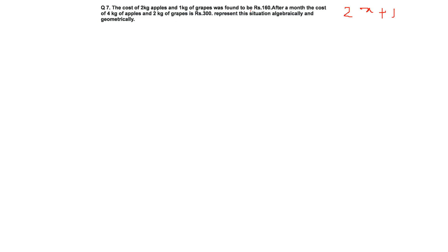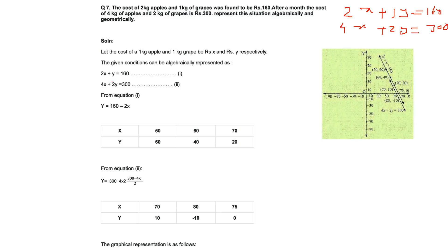The cost of 2 kg of apples and 1 kg of grapes was 160 rupees. Let X be the cost per kg of apples and Y be the cost per kg of grapes. Then 2X + Y = 160. After a month, 4 kg of apples and 2 kg of grapes cost 300 rupees, giving 4X + 2Y = 300. These are our two equations to represent algebraically and graphically.